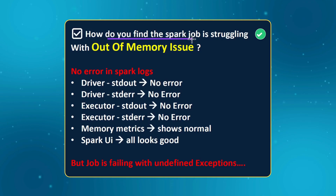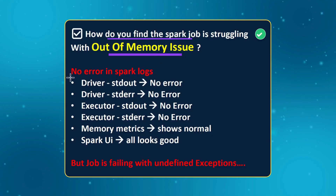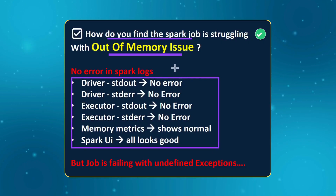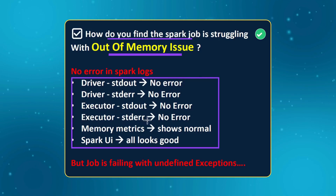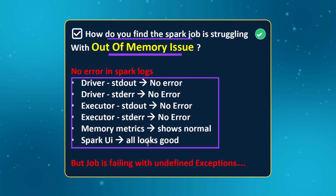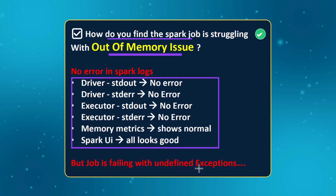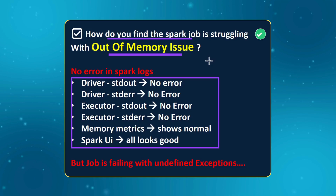How do you find the Spark job which is struggling with out of memory issues? Here is the catchy point: if you find the Spark log, you didn't find any error related to out of memory — the executor standard out, executor standard error, driver standard out, memory metrics, and Spark UI everything looks normal and there is no issue with memory. That's what these logs are portraying, but your job is still failing with undefined exceptions that are indirectly related to out of memory.